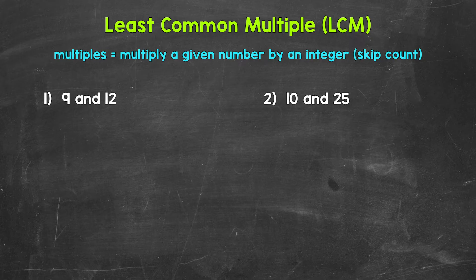Let's jump into our examples, starting with number one, where we have 9 and 12. We're going to start by listing some multiples of both 9 and 12. Then we will look for common multiples, and specifically the least common multiple, also referred to as the LCM.